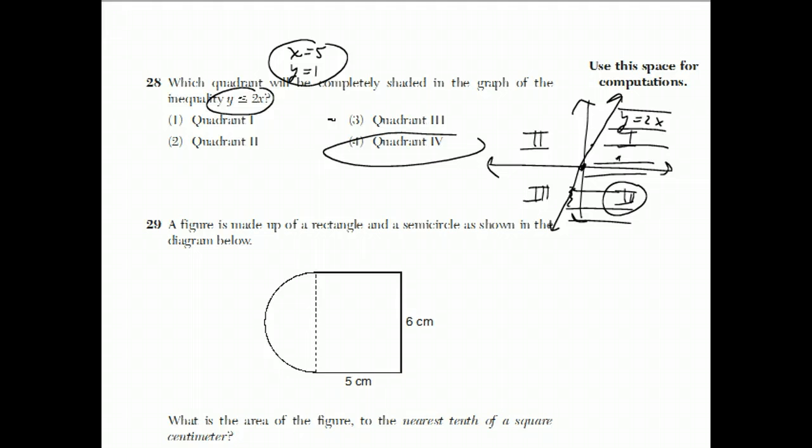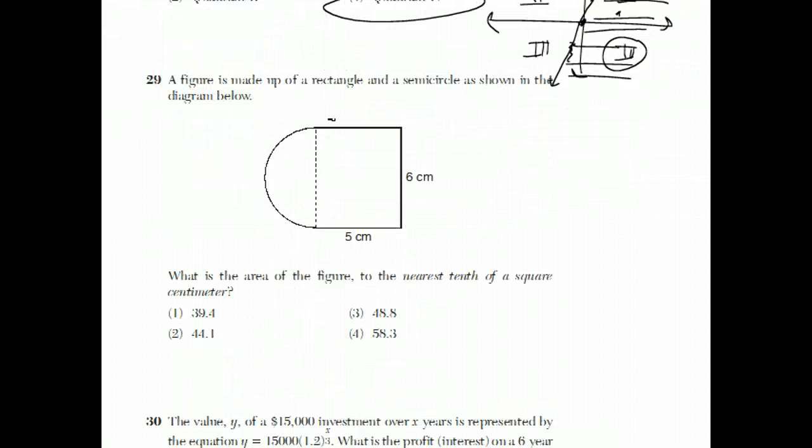Question number 29. A figure is made up of a rectangle and a semicircle, as shown in the diagram below. What's the area to the nearest tenth of a square centimeter? Well, there's a rectangle and there's a semicircle.